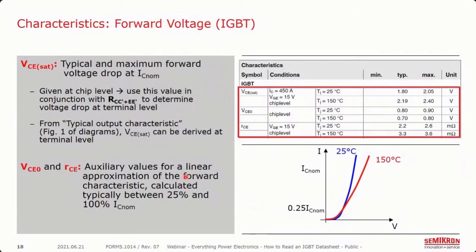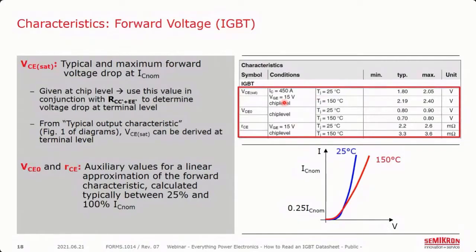For forward characteristics: VCESAT for the IGBT is the collector-emitter saturation voltage — the voltage drop across the IGBT during conduction of nominal current ICNOM. Since it's given at nominal current, it's often used by designers as an indicator of conduction loss quality for a particular chip generation or power module. This is valid at chip level and does not include the voltage drop across the parasitic resistances. If you want to measure that voltage drop at the power terminals, you'll need to add the effect of that resistance.